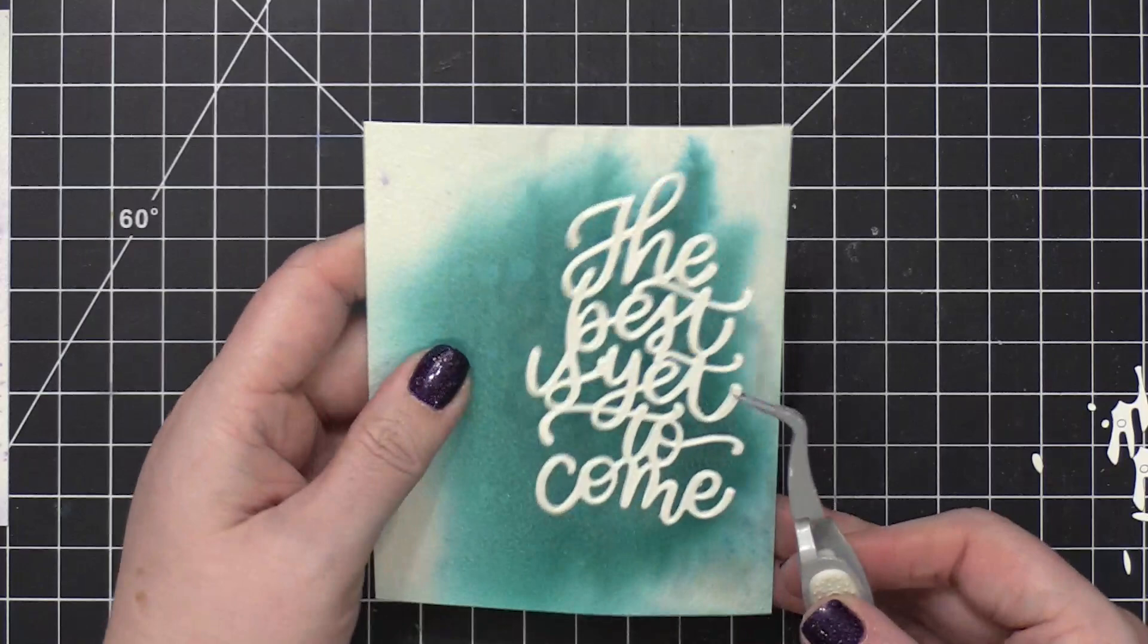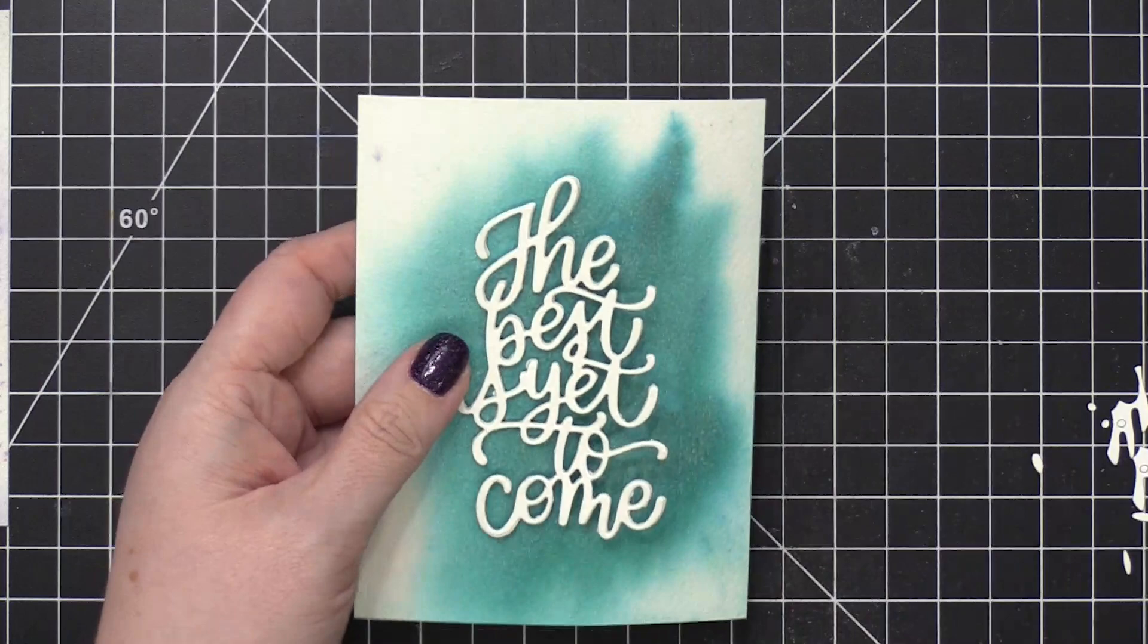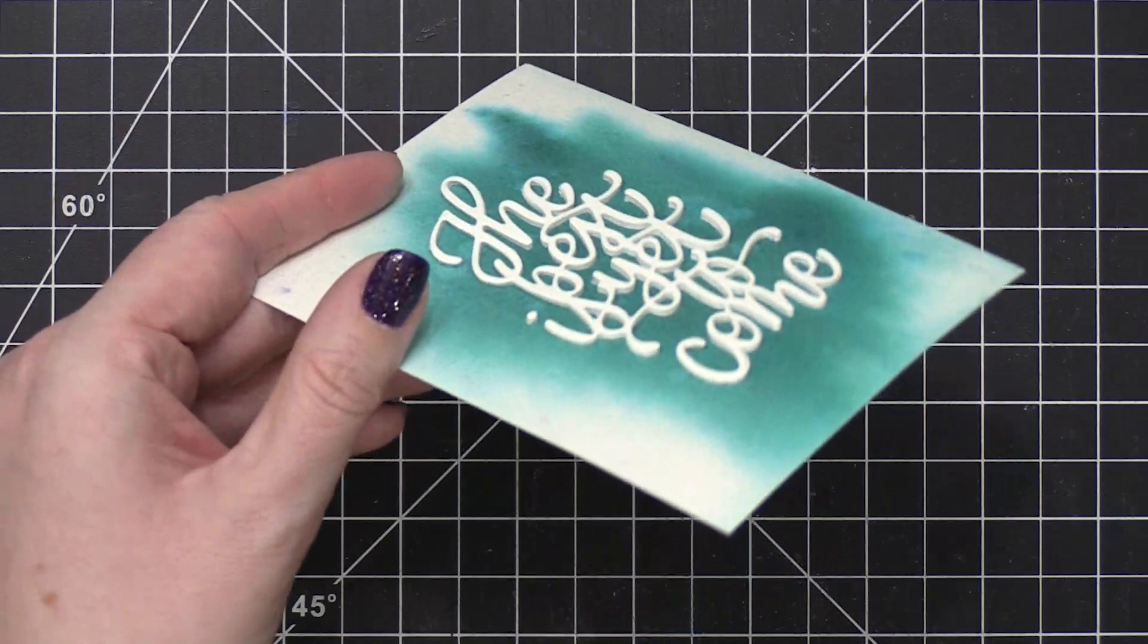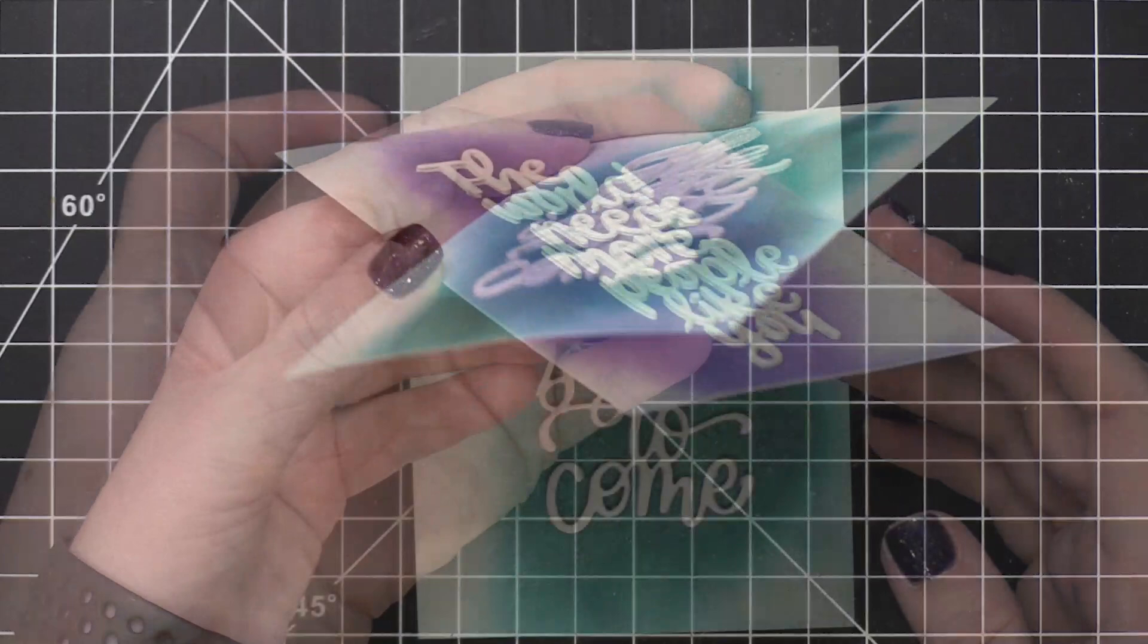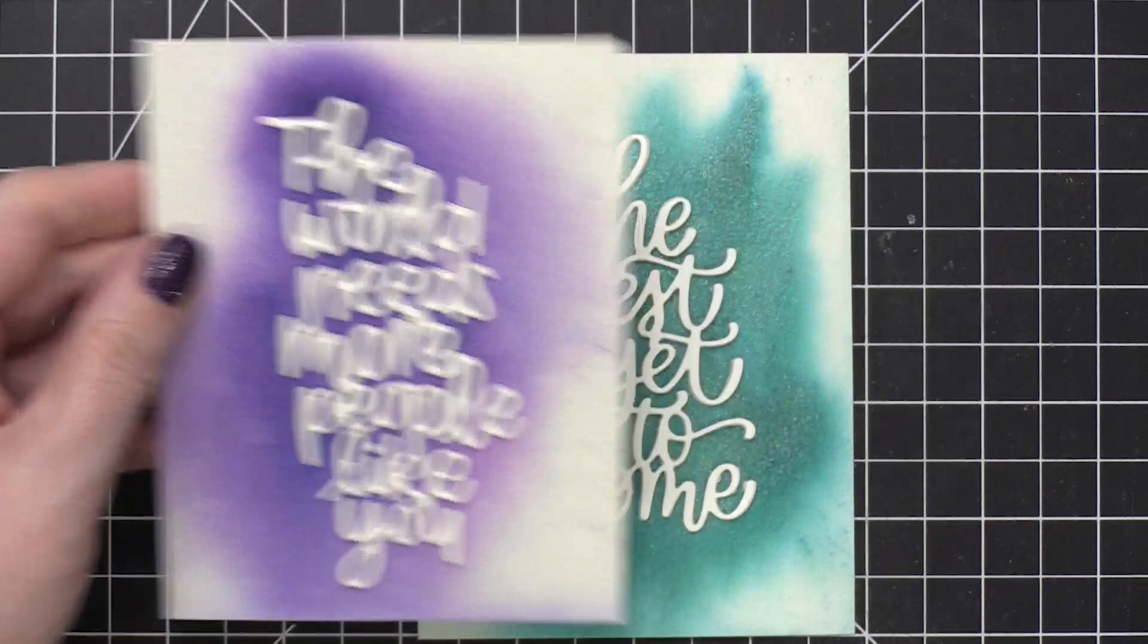I did the same for the other die, all the other die cuts, four layers worth, adhered them all together, and then adhered them directly onto my watercolor background and pressed it down really well. You can see how thick those die cuts are all stacked together. It's a really dramatic effect on a very simple background like this. I think it looks really neat.